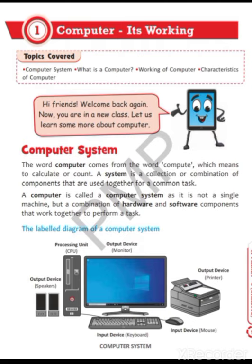Firstly we will learn about the hardware components. Our first one is monitor, second is keyboard, third is mouse, and fourth is CPU. These four devices are our main devices through which our computer system can work. Like if we are not having a keyboard, it's not possible for us to do the work. In the same way, if we are not having a CPU, it's also not possible. Two output devices are there: printer and speaker.